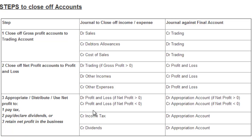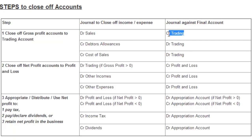The left column here represents the accounts that we are going to close off and the entry that you need to record on them. The right column represents the journal that is going to be processed against the final account. Just one example: sales is a credit in the trial balance, so to close it off we need to put the opposite entry. We are going to debit sales in order to close it off to the trading account, and for every debit there needs to be a credit, so we will credit the trading account. You can keep this as a reference for your various entries.